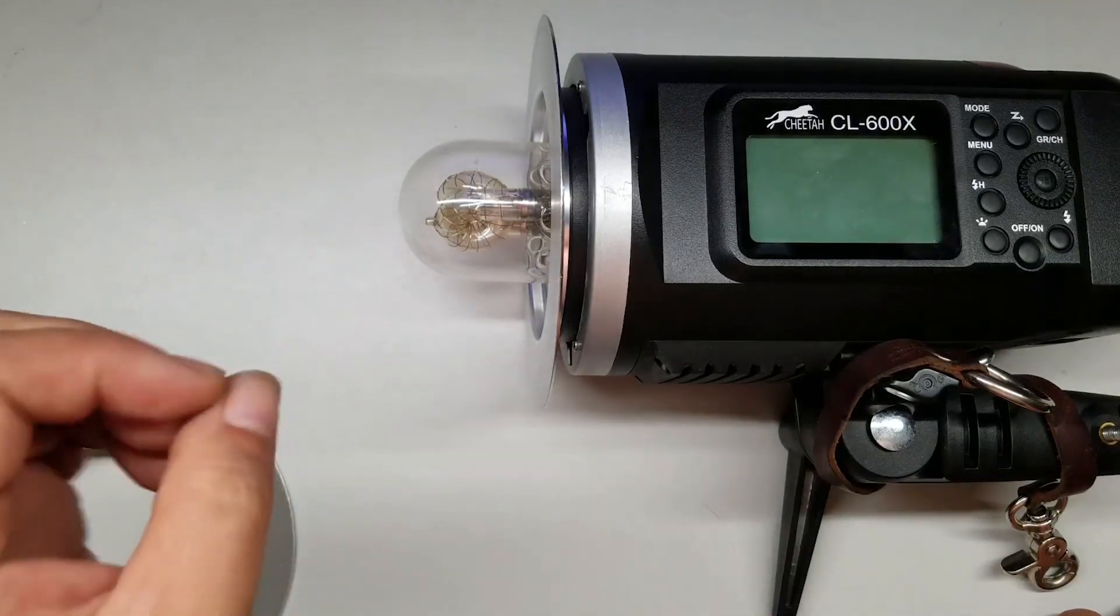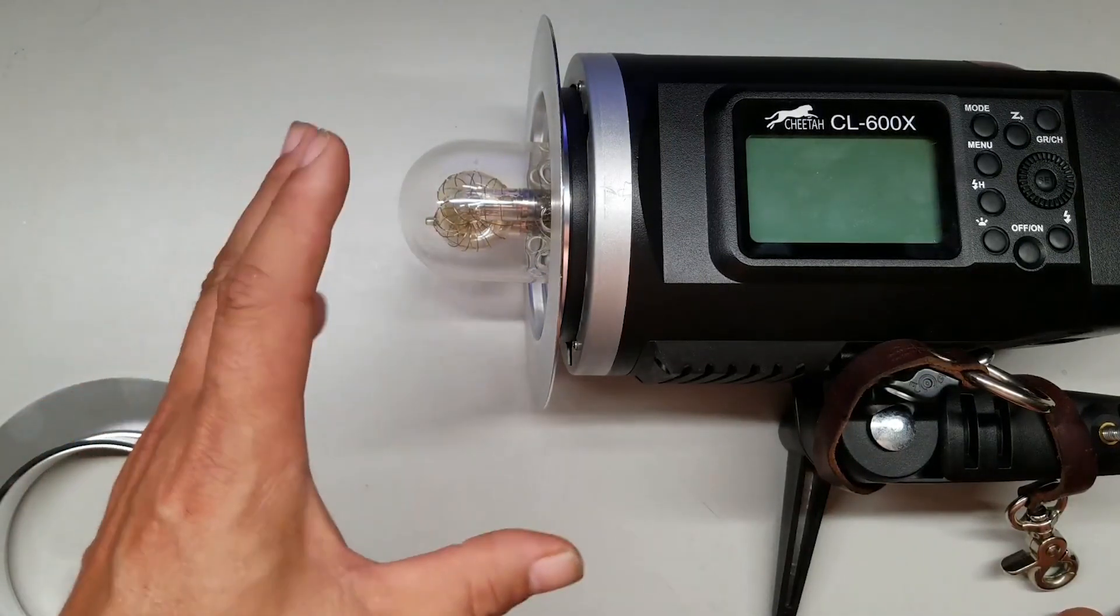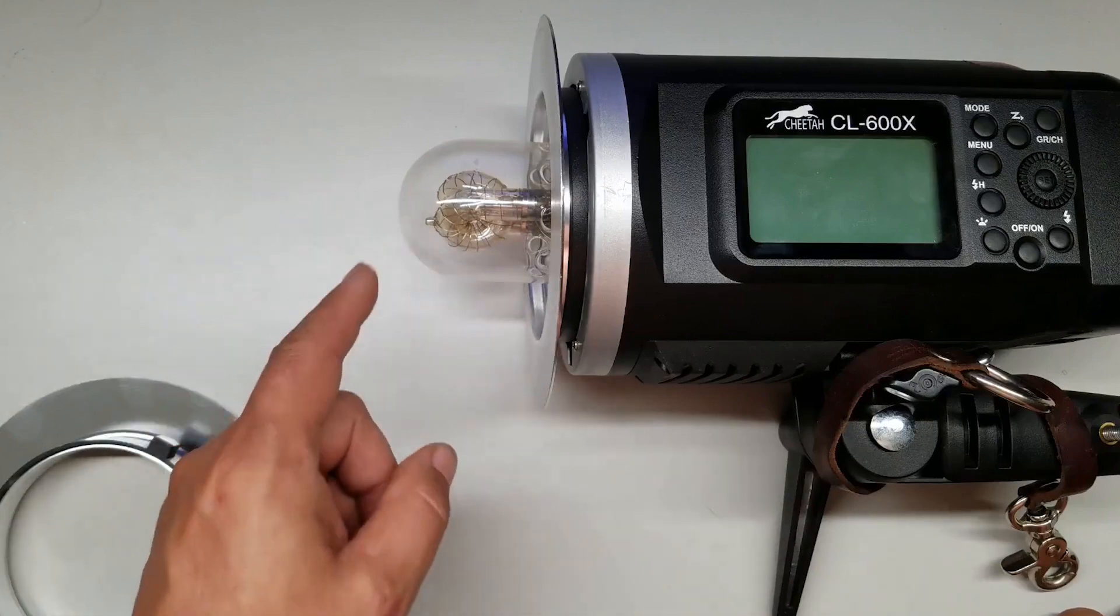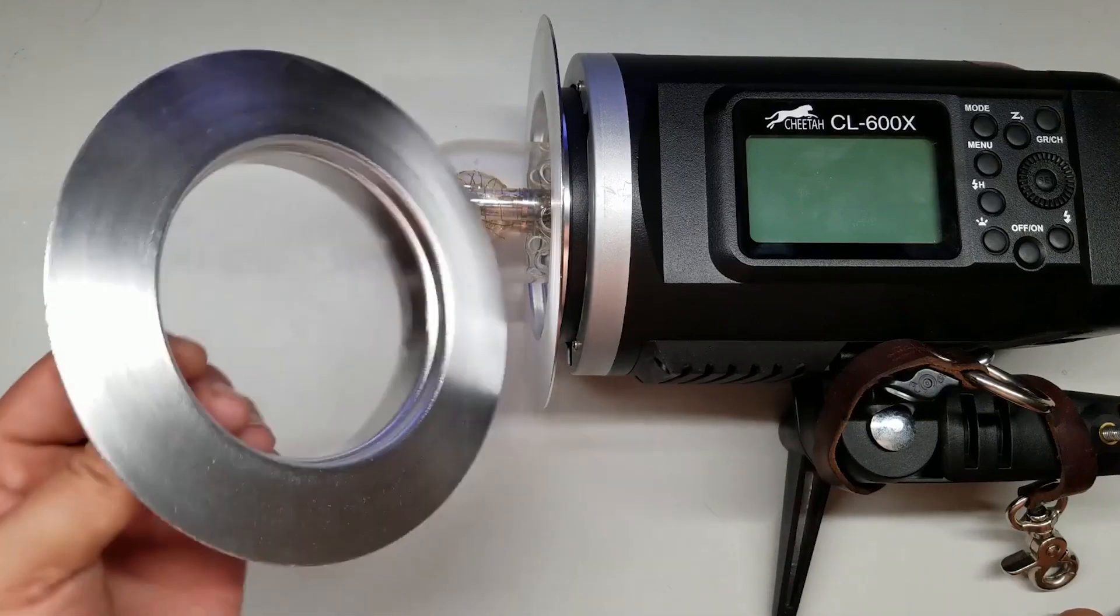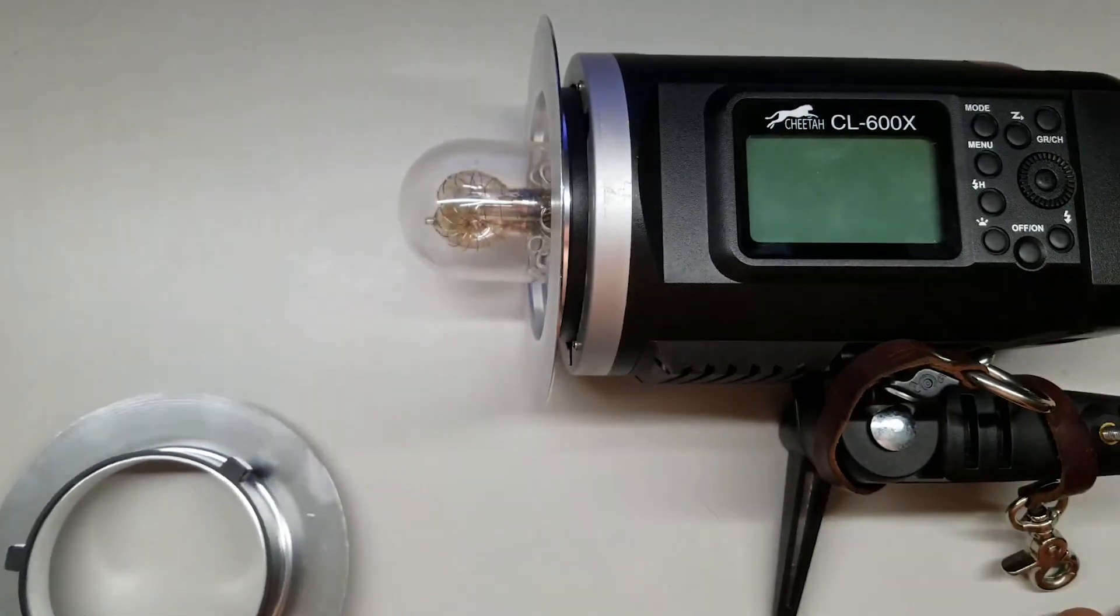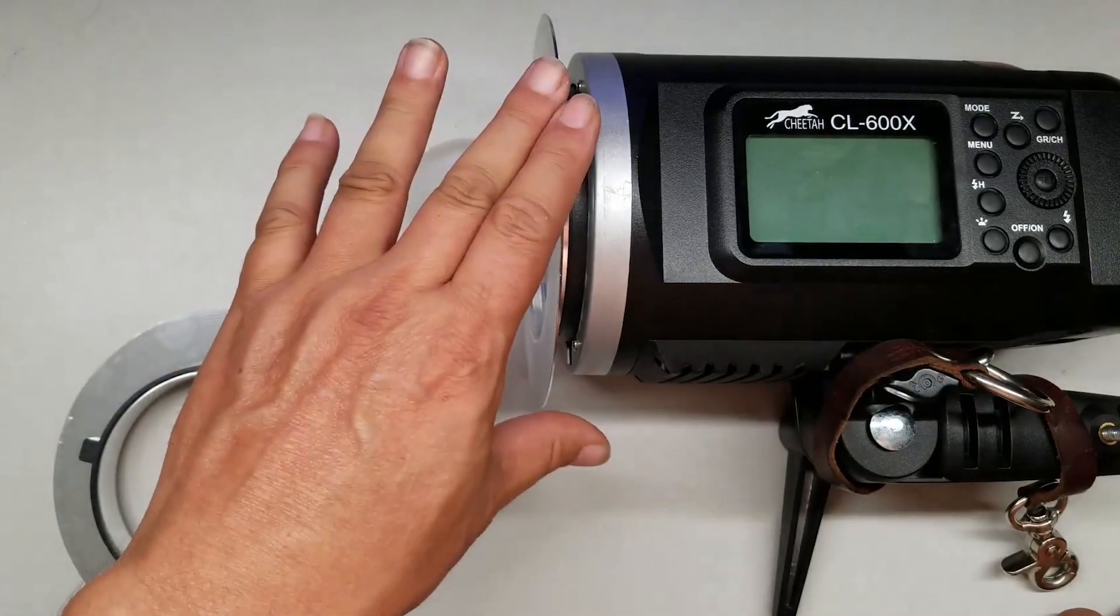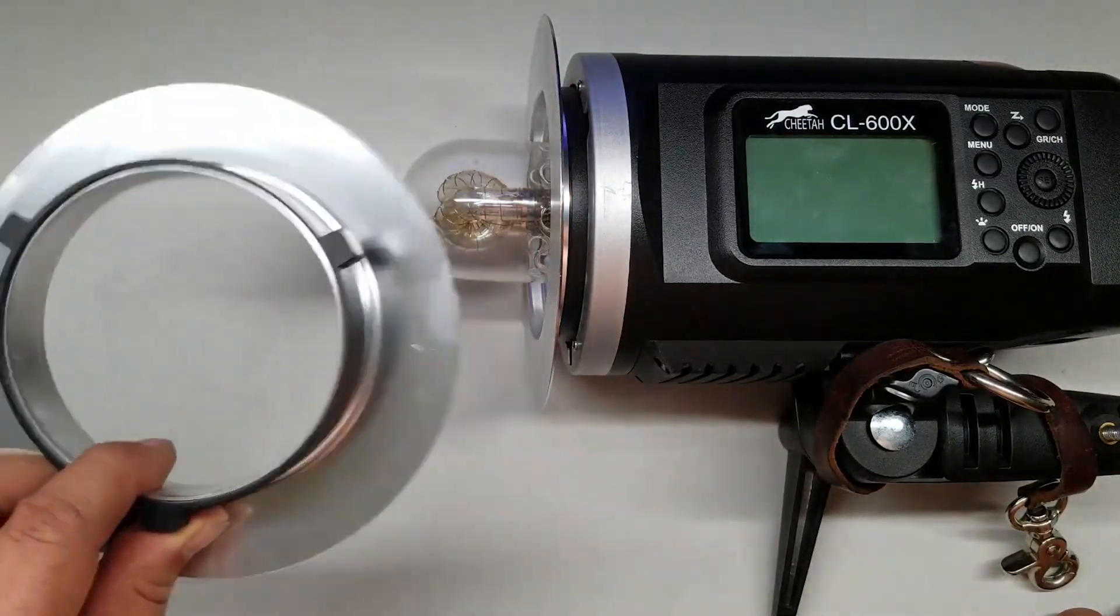If you have a quick setup modifier from Cheetah Stand, this ring is made for that six inches. If you have the quicksilver modifiers from Cheetah Stand, again, six inches insert ring.